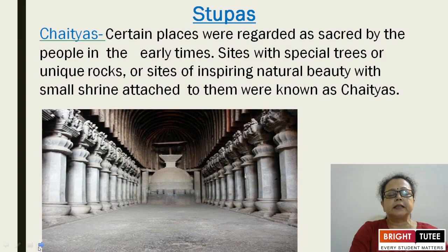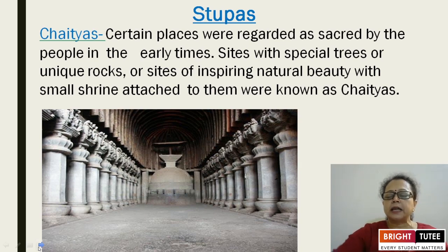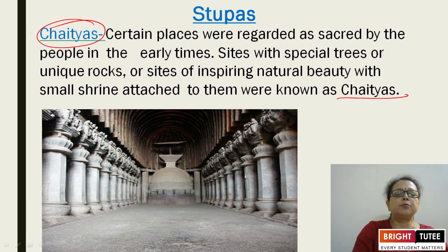Then stupas. In the construction of stupas, chaityas are also been made. Certain places were regarded as sacred by the people in early times. Sites with special trees or unique rocks, or sites of inspiring natural beauty with small shrines attached to them were known as chaityas. This is the definition of chaityas in Buddhist texts.